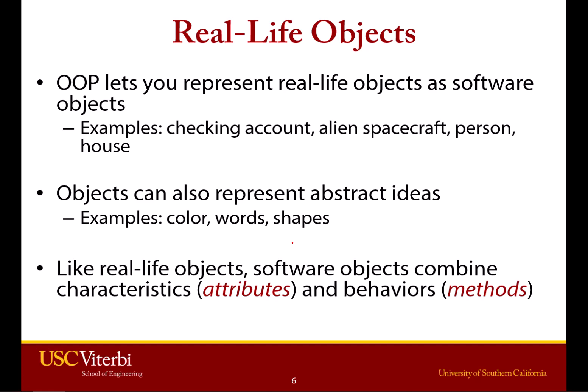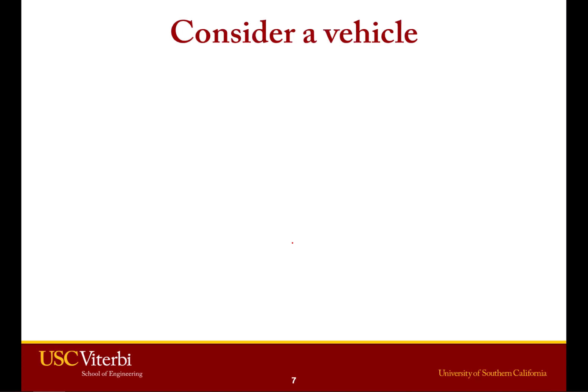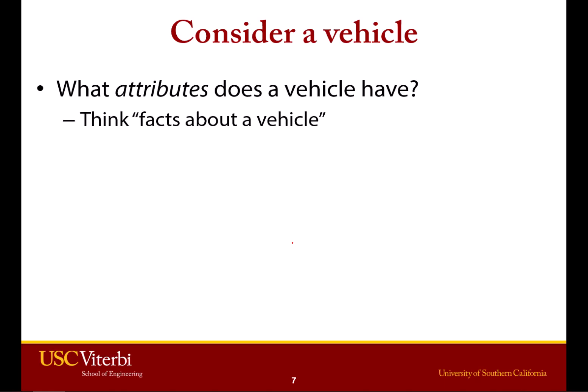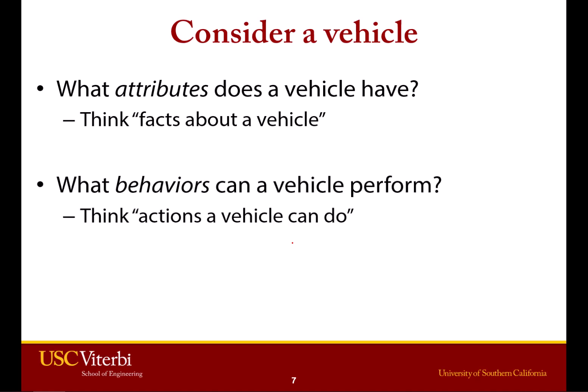Consider a vehicle like a car or automobile. Imagine what attributes a vehicle has — what facts would you want to store about it? Then think about what kind of things a car can do — we call these behaviors. We don't often think of a car performing an action on itself, but we could consider what a person could do in a car, for example.